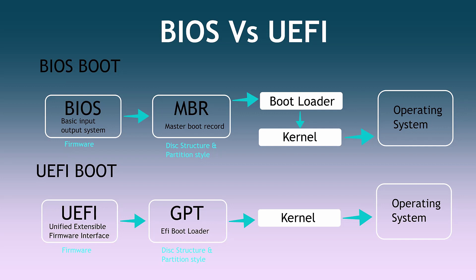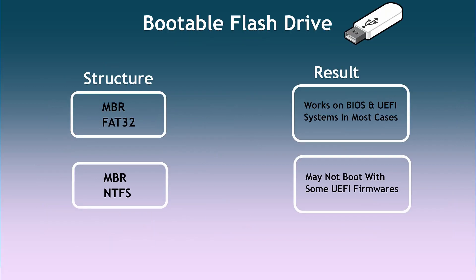It is advised to use the UEFI and GPT combination, and Windows 11 supports only UEFI with GPT disk. So for your USB flash drive, you need to know what type of structure is required so that you can easily install Windows 11 on a UEFI system. A UEFI system means UEFI firmware plus GPT disk. The USB flash drive is also a type of disk which can be MBR or GPT.